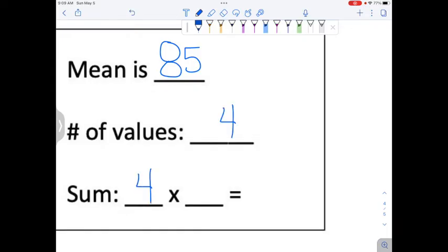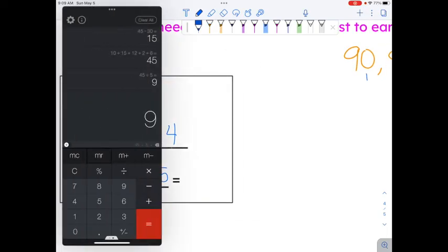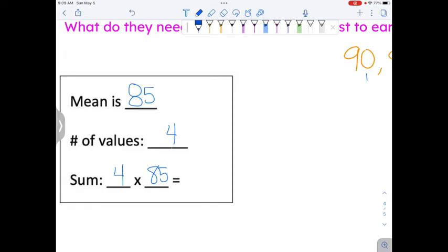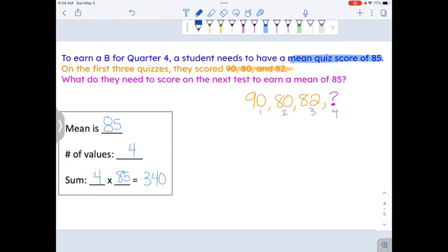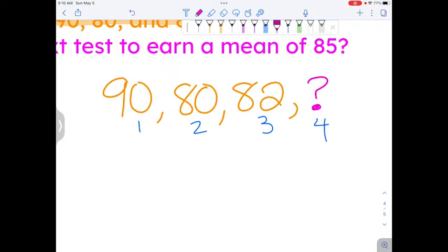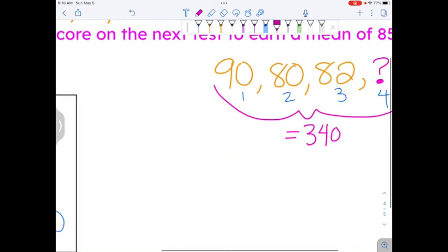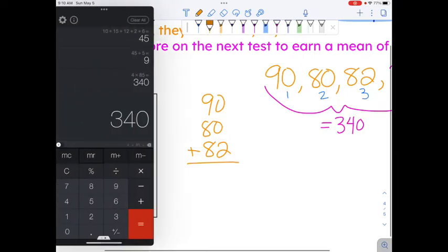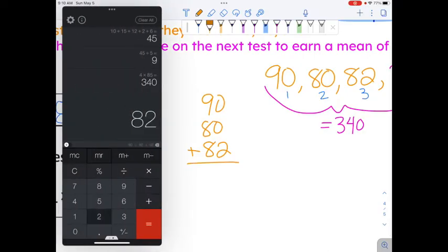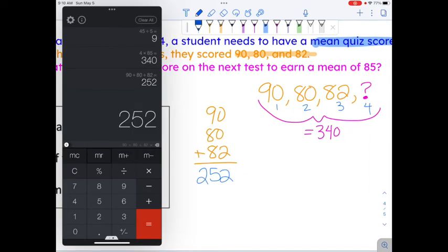So to find the sum, we're going to say that there are four values in the list. And if we times by that mean, 85, we'll get the number that they should all add up to. Four times 85 is 340. So these numbers right here should all add up to 340. But right now they don't. What do they add up to? 90, 80, 82. You can add them by hand, or you are welcome to put them in the calculator. 90 plus 80 plus 82 is 252.